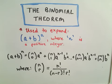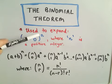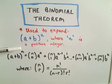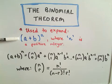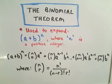This video is going to be about what's called the binomial theorem. It's typically used to expand expressions of the form (a + b) raised to the n, where n is a positive integer. You can foil this out or multiply it out repeatedly, but by using this formula it's a much more efficient way of doing that. A couple of remarks about the formula.